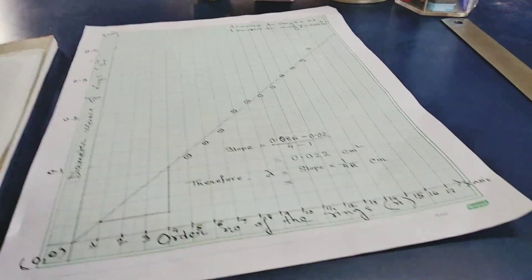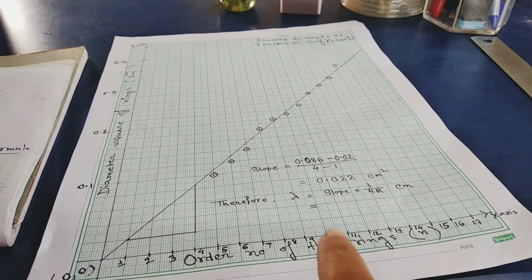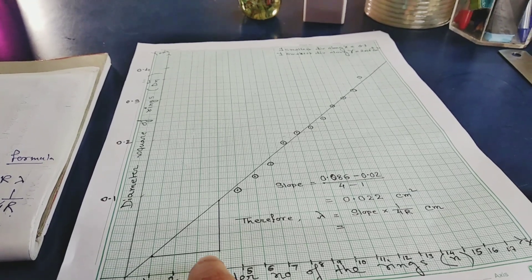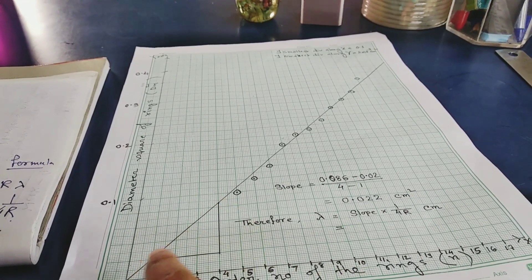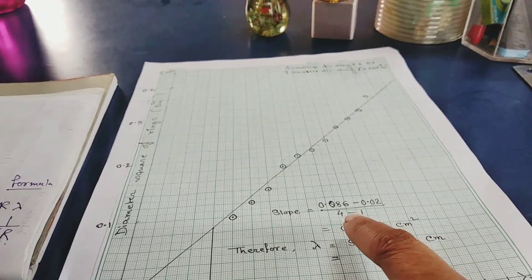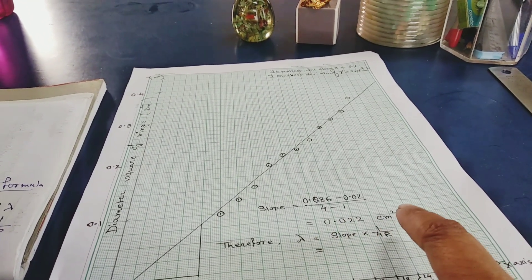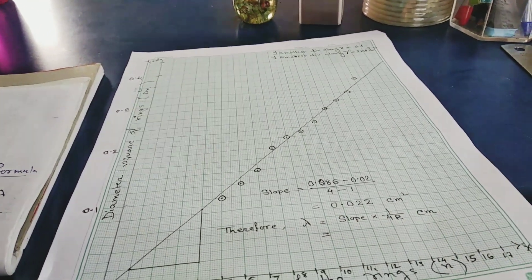Now, we need to choose two points on the straight line rather than experimental points to find the slope. So, I have chosen two points and find out the slope. And slope comes 0.022 cm2. Next, we know the working formula of lambda.